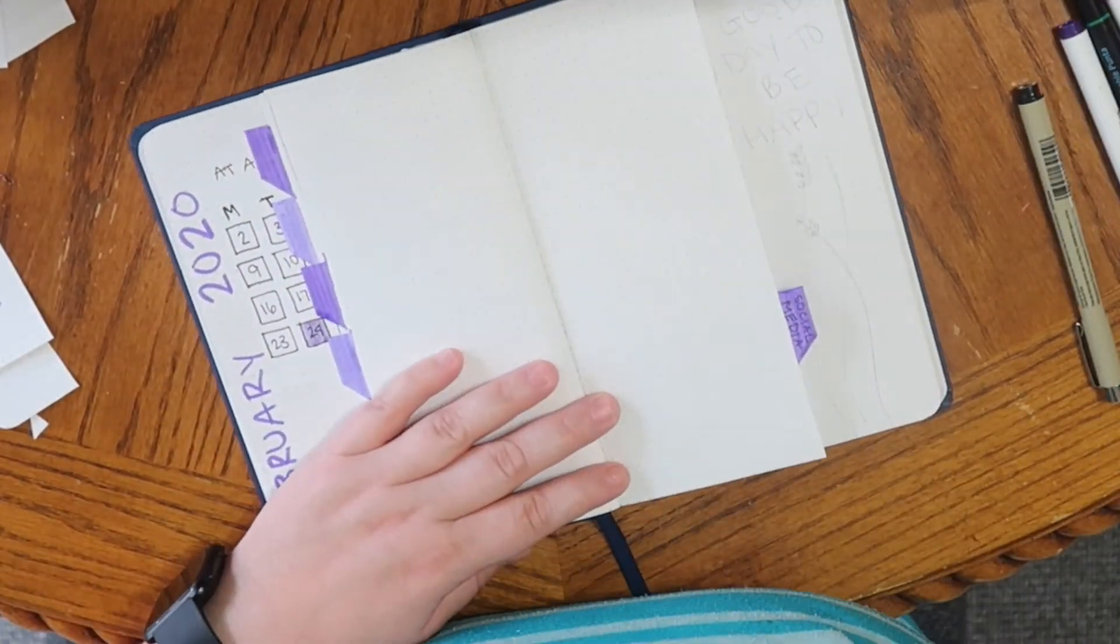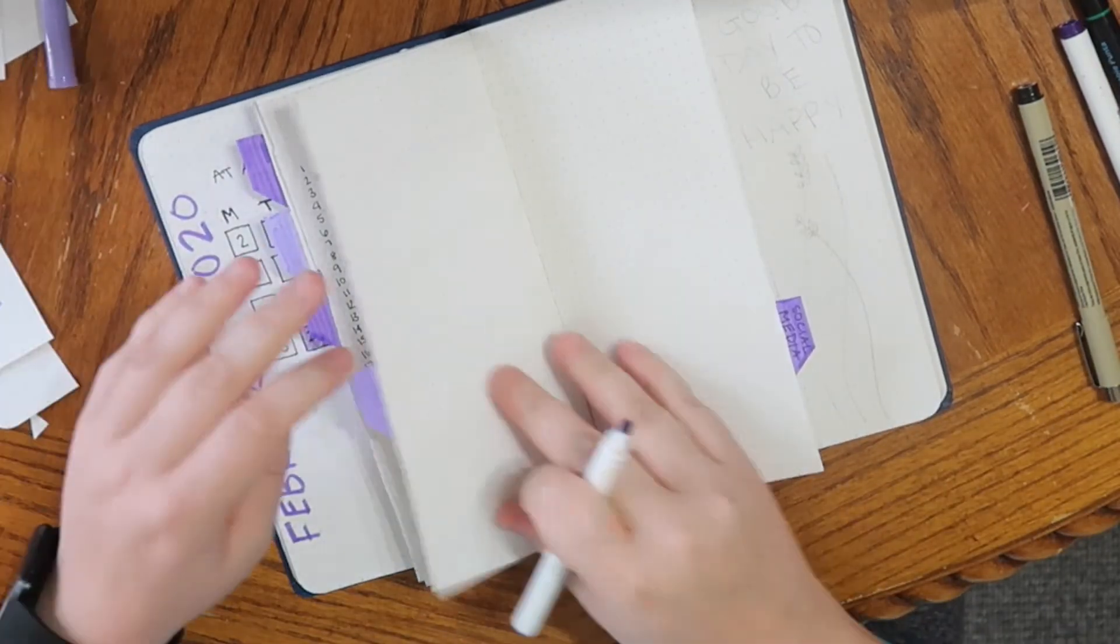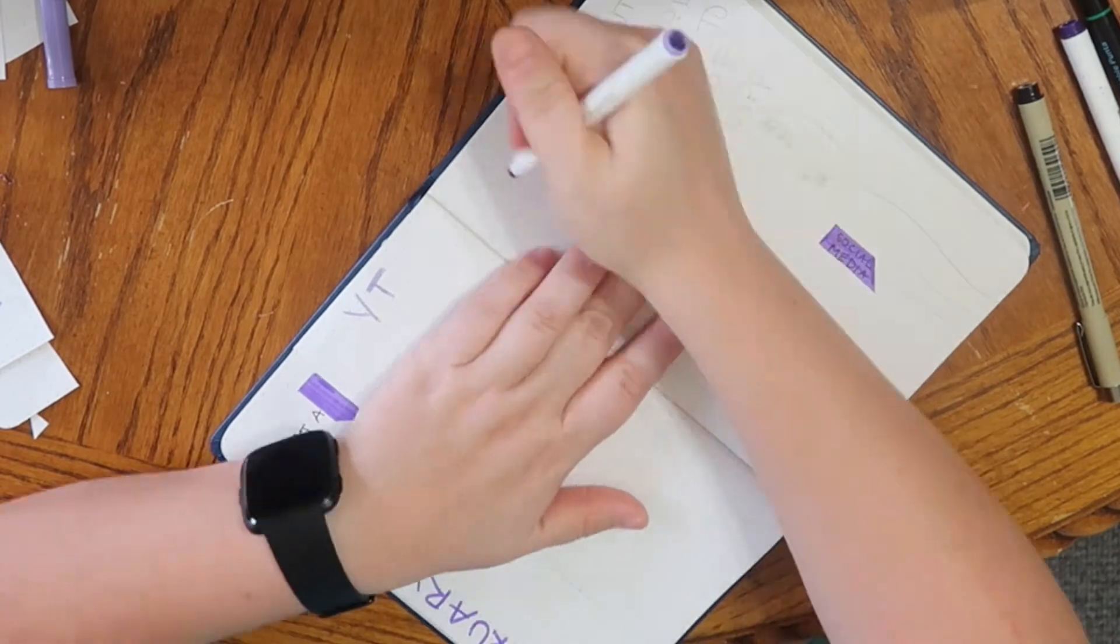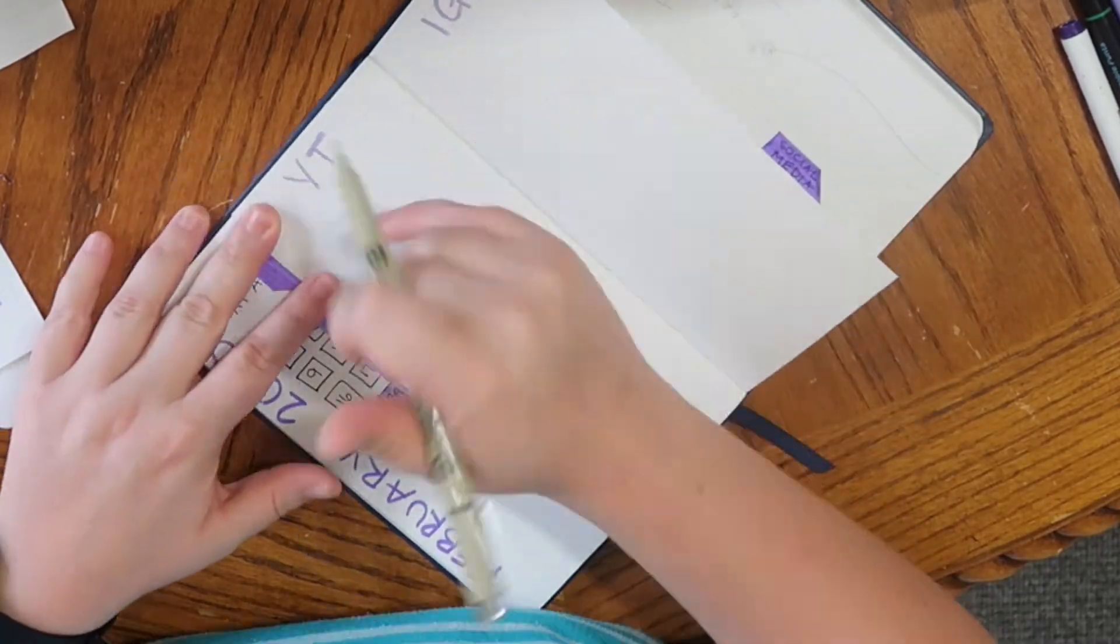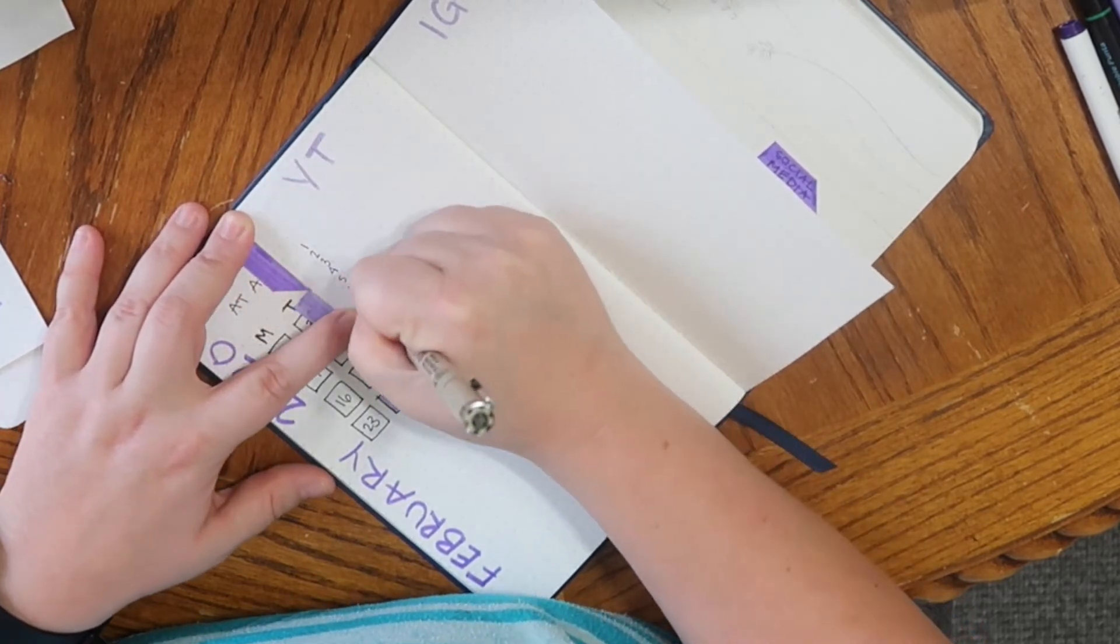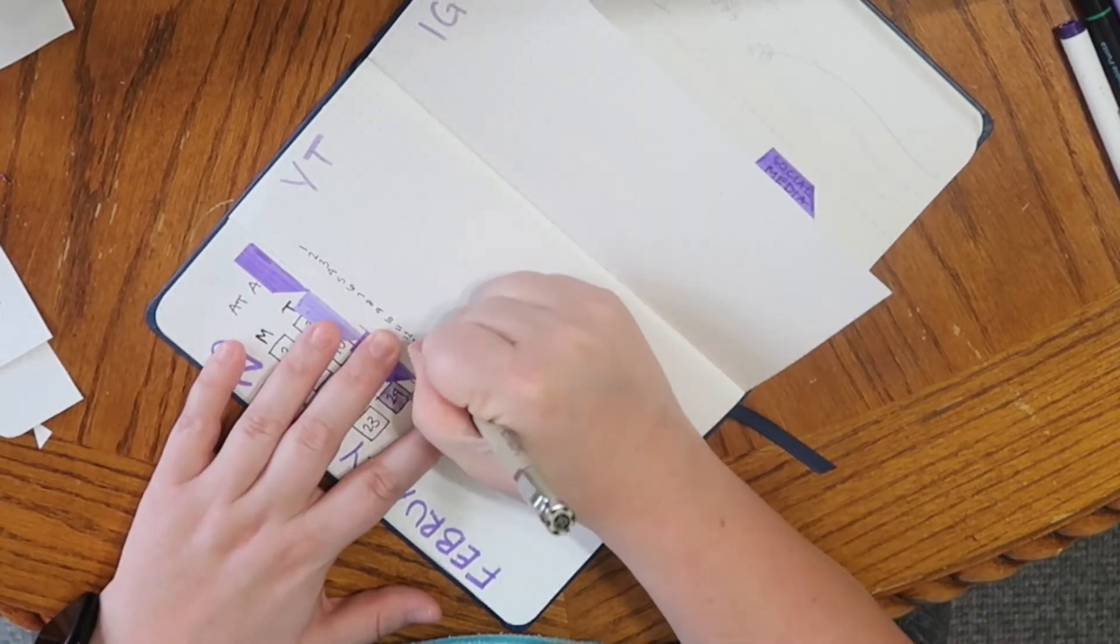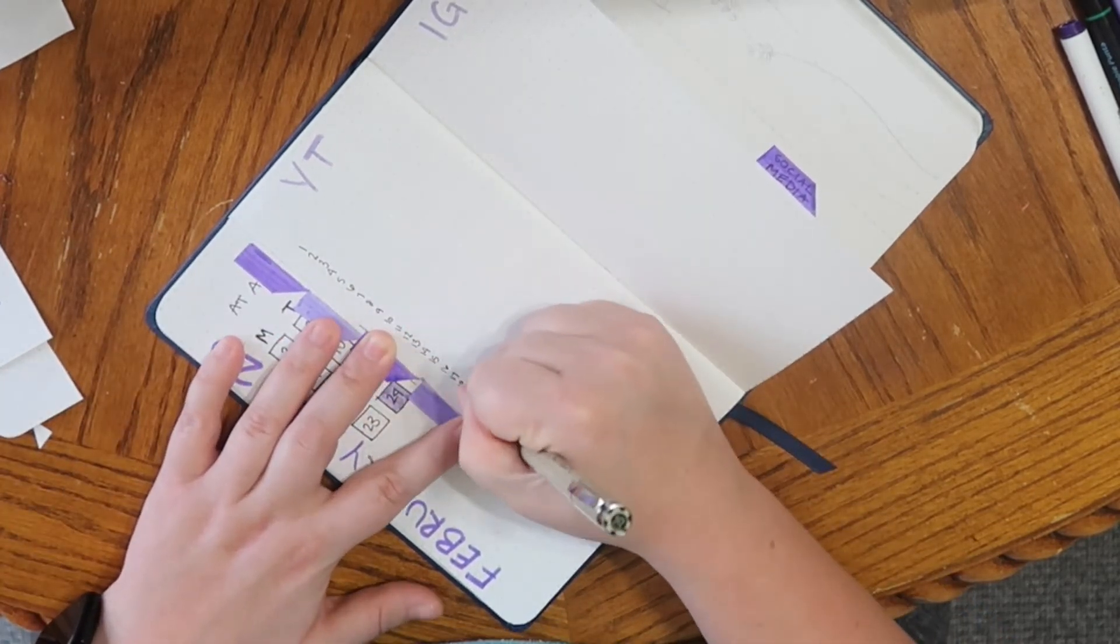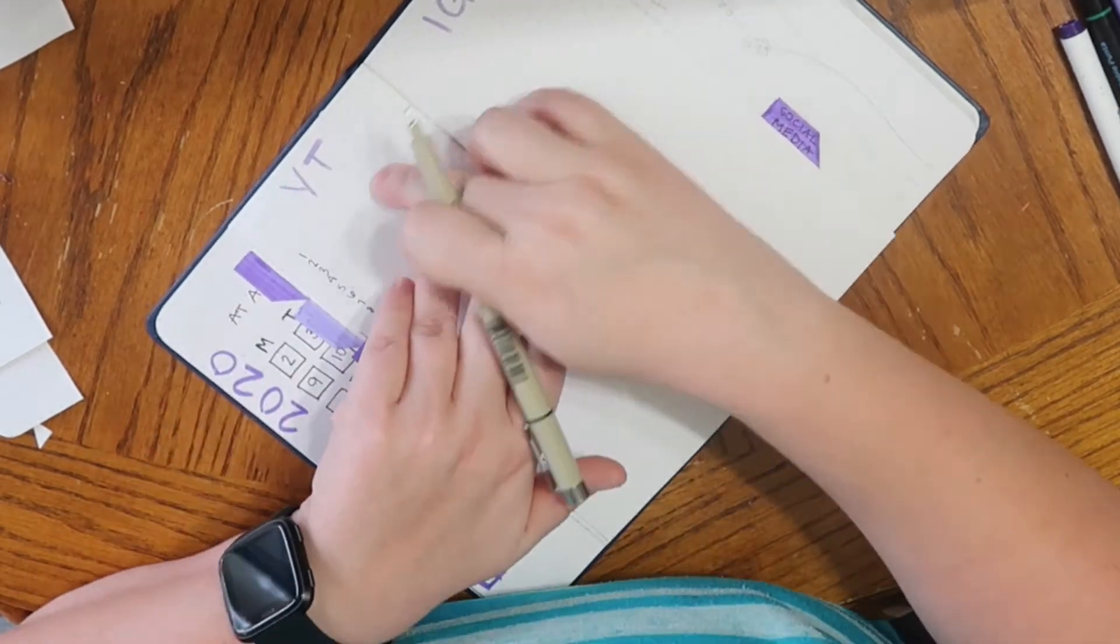And this next page is going to be my social media spread where I record what YouTube videos I put down and anything that I post on Instagram. I just like to track how often I'm doing that. I'm trying to post more frequently on Instagram. And of course I still have the two videos a week goal, which I did not hit last week because Kai was super sick.